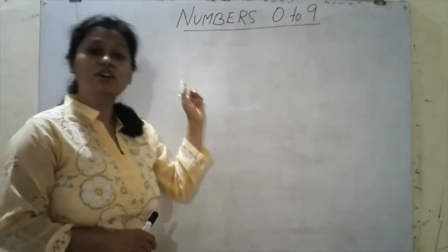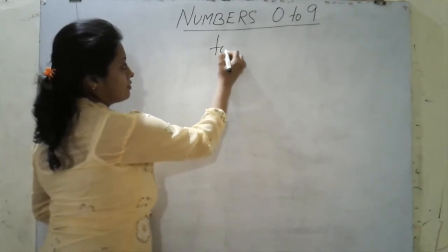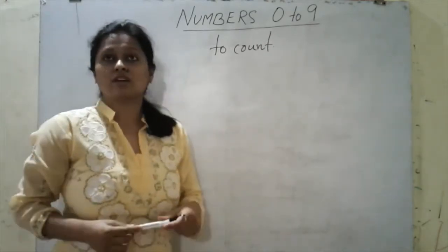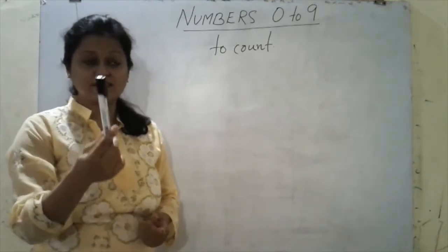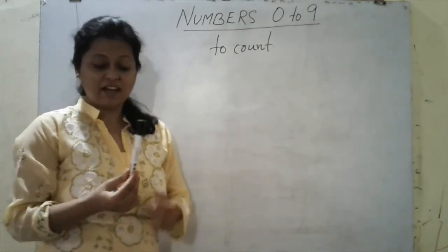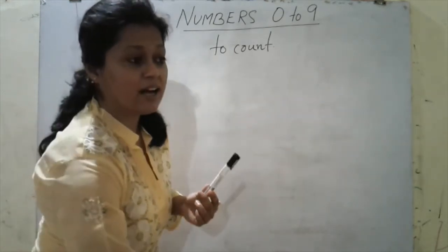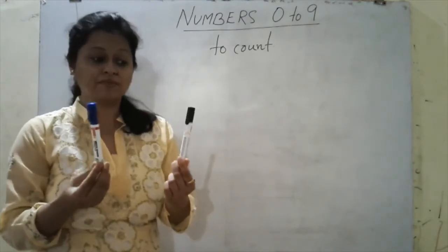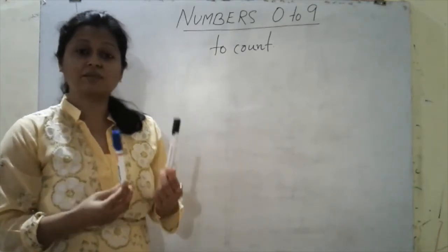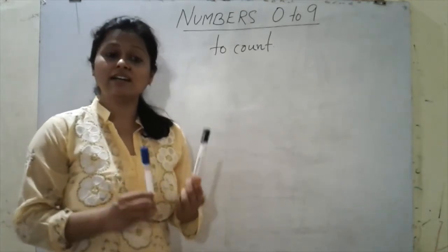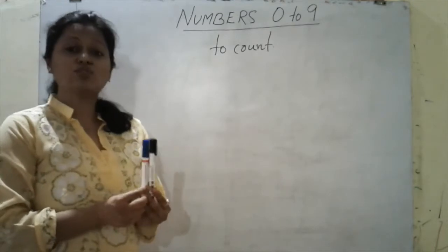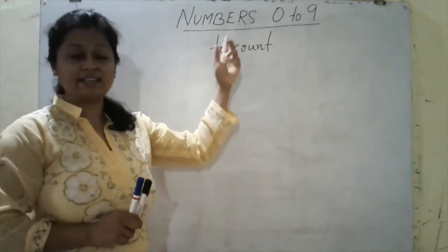Secondly, we need to know numbers to count. Count means to do counting. For example, if I ask you, tell me how many pens do I have in my hand? You tell me, teacher, you have just one pen in your hand. One. We counted, right? One pen in teacher's hand. Now, if I take another pen and ask you, children, now tell me how many pens do I have in my hand? One. Another one makes two pens in my hand. So this way we are counting. One, two, three, four, and so on. We need to count and to count we need to know numbers.